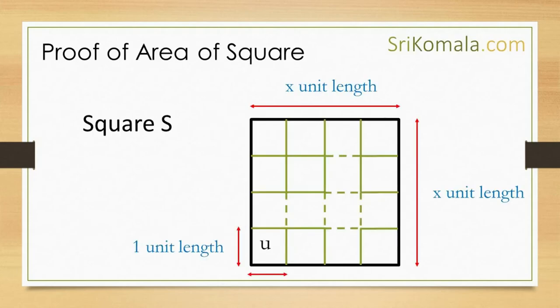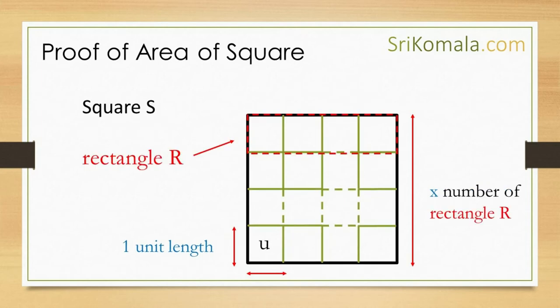Having understood the duplicate ratio, let us prove the area of a square. First, let us consider a square whose sides are x number of unit lengths. This square is portrayed in the slide as square S. Secondly, let us divide square S into x number of equal rectangles, as shown in the figure. Let us call this rectangle as rectangle R. It can be understood that inside square S, there are x number of rectangle R. Please see the figure for better understanding.